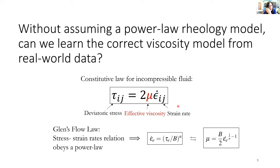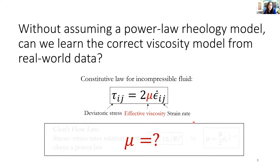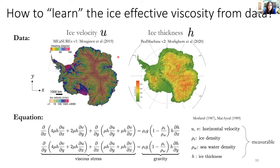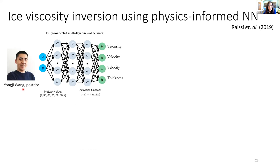Instead of assuming a power-law rheology, we want to take a step back and assess whether we can leverage the data we have to learn the rheology model — to learn the viscosity structure without assuming any power-law expressions. We have velocity measurements and thickness from satellite observation. Our goal is to find the viscosity field that, together with this velocity and thickness, satisfies the shallow shelf approximation. Yangji led the development of a physics-informed neural network for ice viscosity inversion. The physics-informed neural network not only fits the observed velocity and thickness, but also fits the shallow shelf equations governing two-dimensional ice flow dynamics.